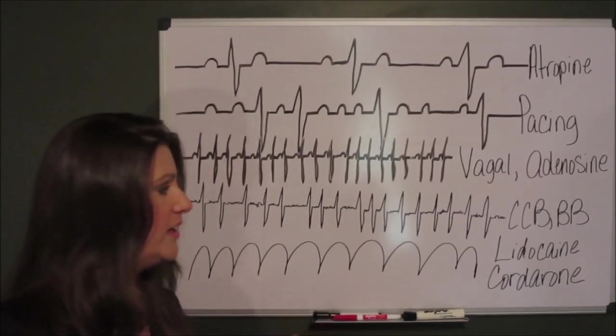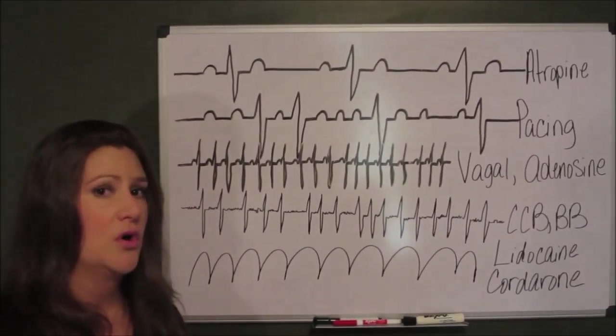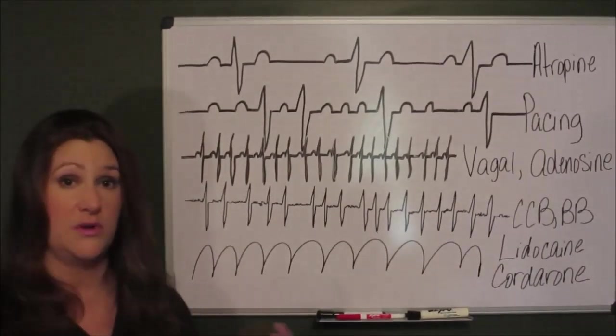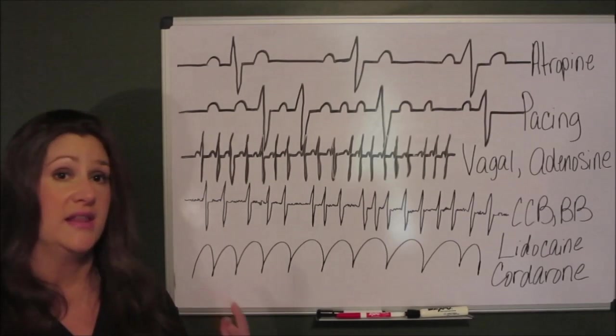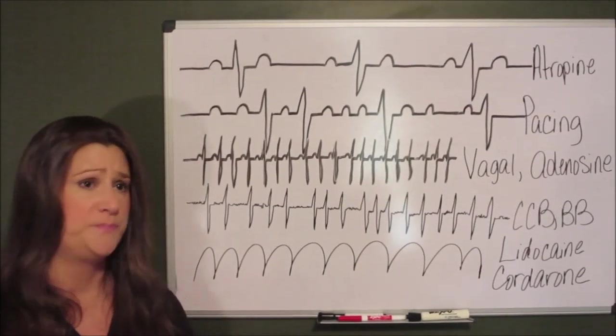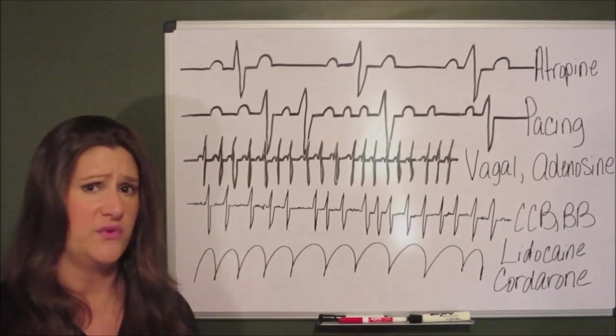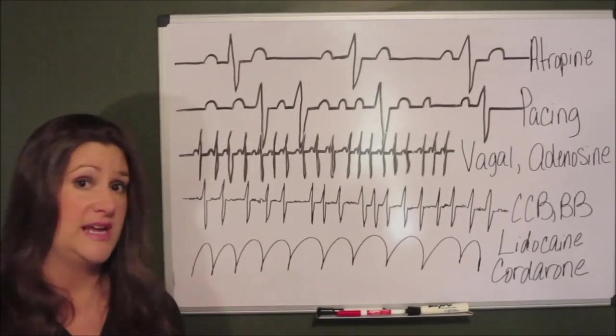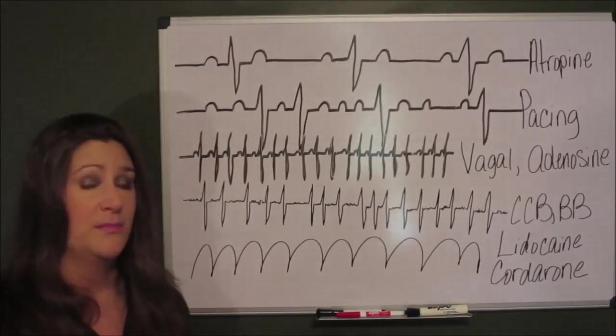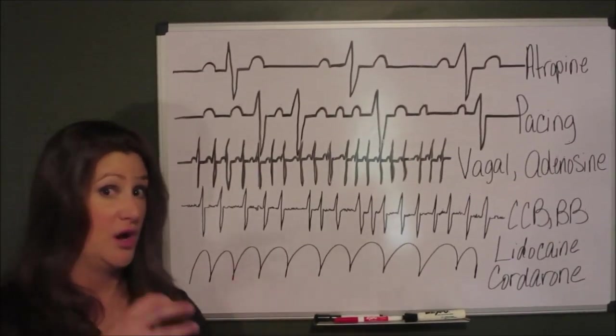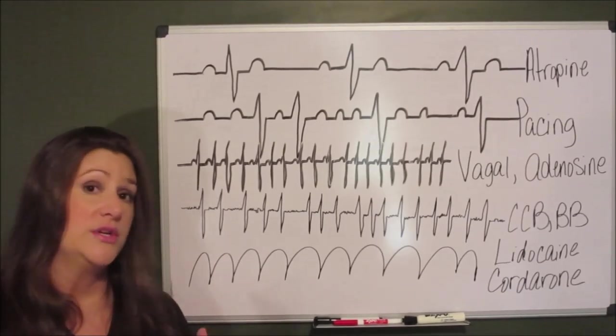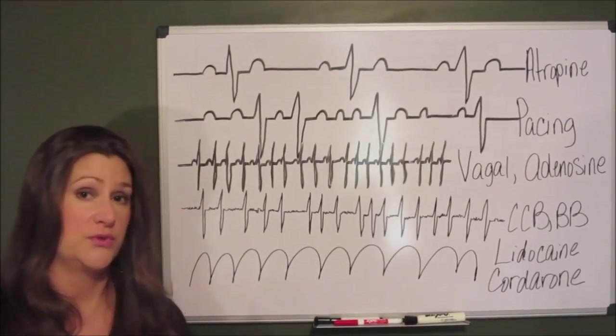So lidocaine. We use lidocaine for patients who we know has had some kind of acute MI and they've had an ischemic episode and they go into VTAC after that. Lidocaine is going to be our drug of choice for that type of VTAC. What lidocaine does is basically it just kind of numbs the ventricles. It kind of numbs the ventricles and it's going to hopefully prevent those ventricles from being overstimulated and control that VTAC.